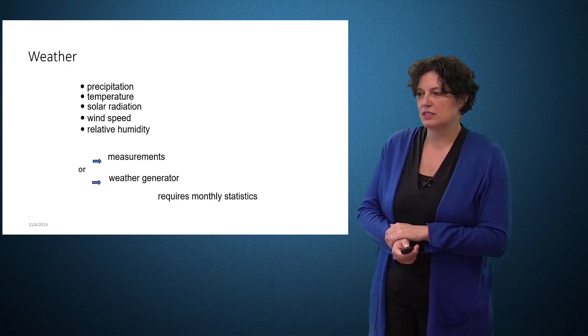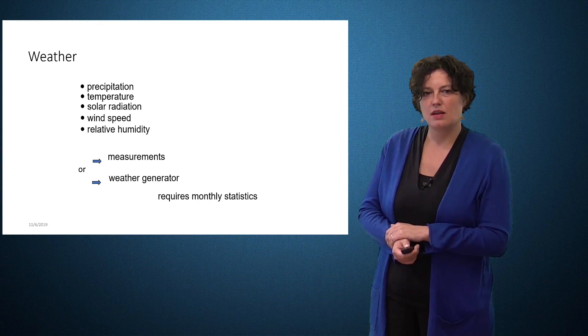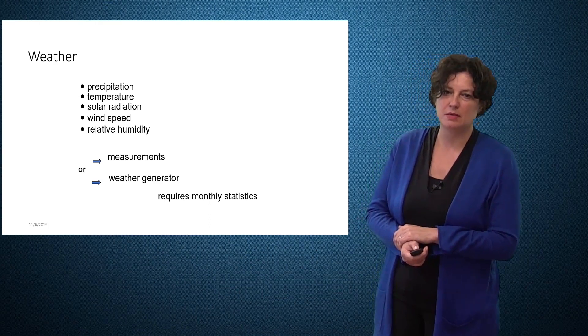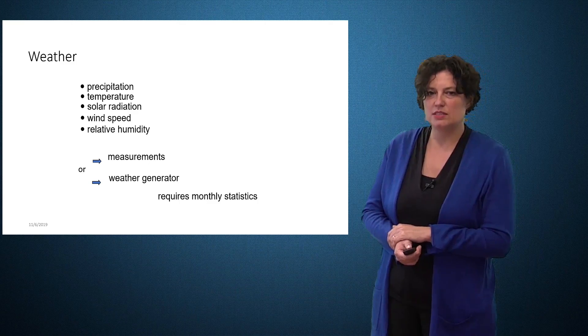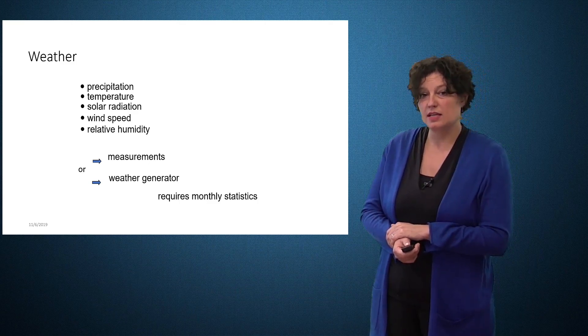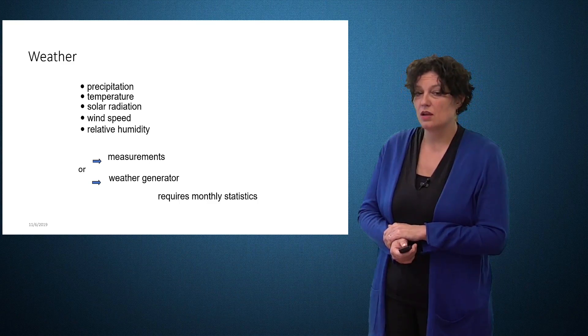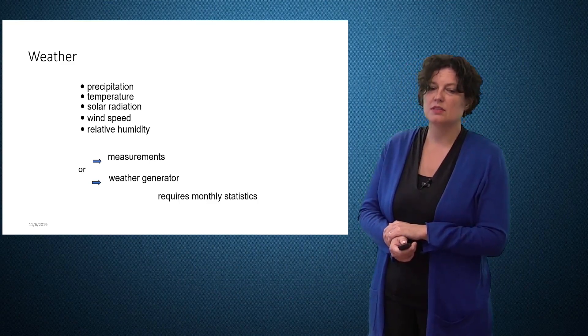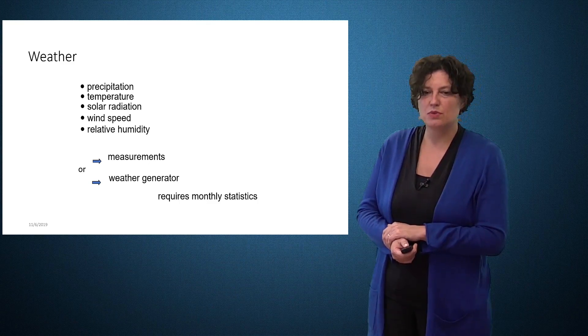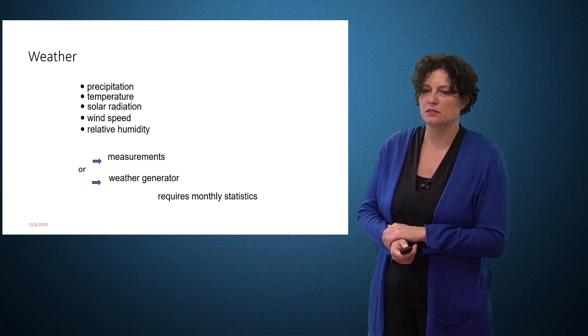Very important is that each element also has an input, and this is mainly the weather. So we have inputs of precipitation, temperature, solar radiation, wind speeds, and relative humidity. This can either come from measurements, but in many cases we may not have all these measurements, and in that case we use a weather generator which is part of SWAT. This relies on some statistical descriptions of the climate.